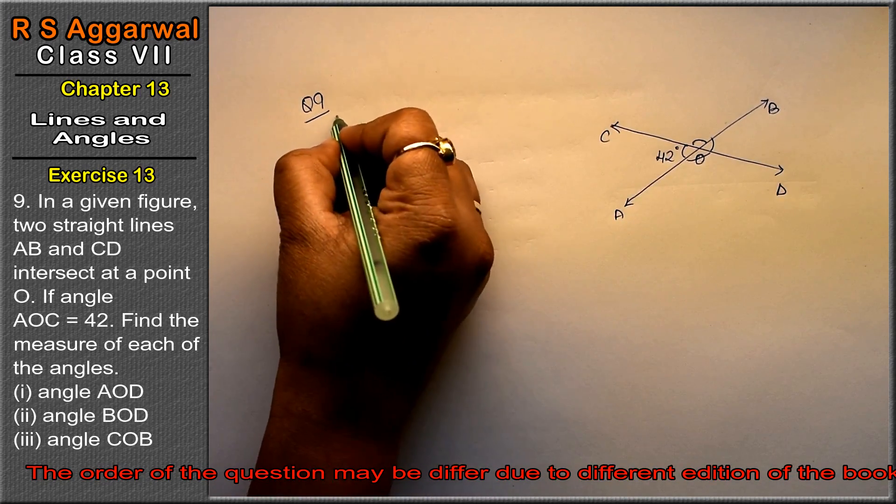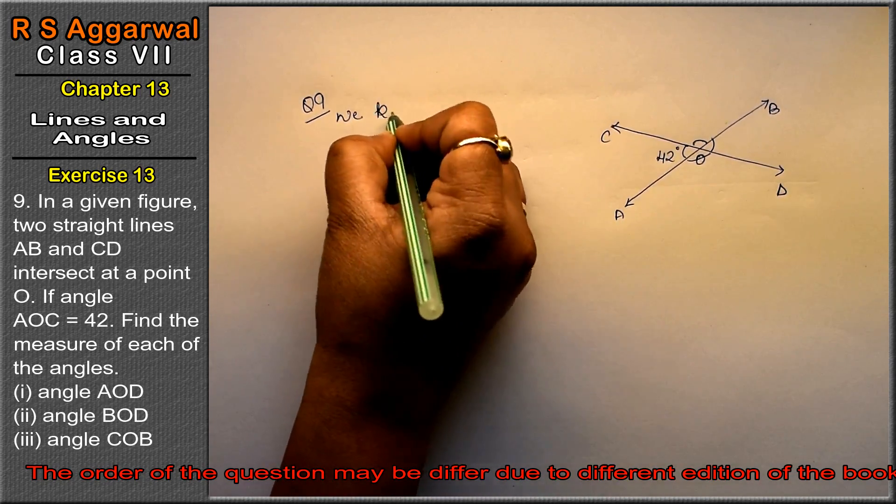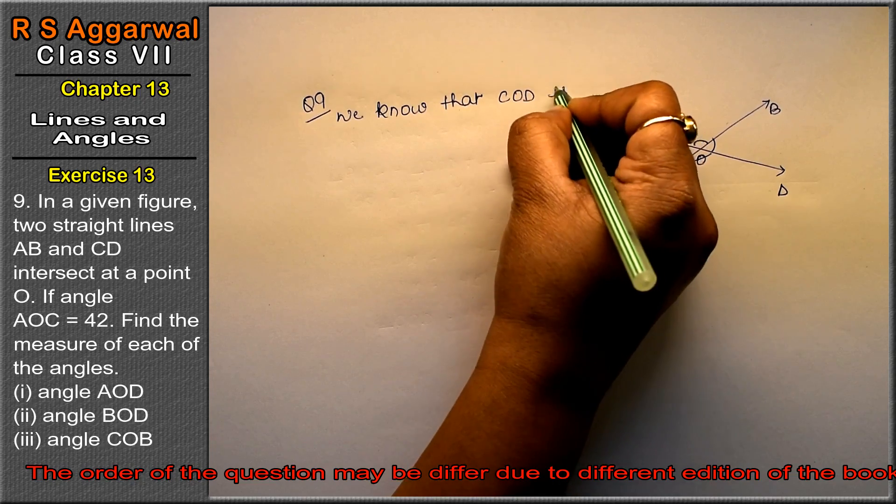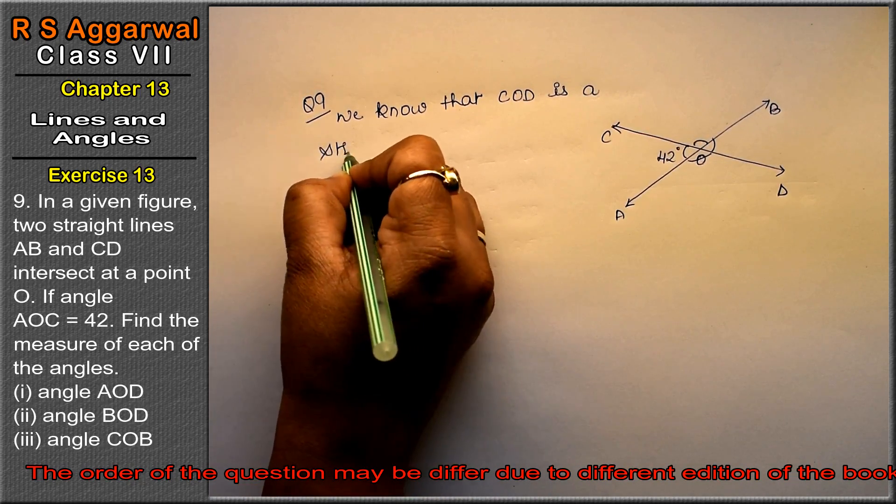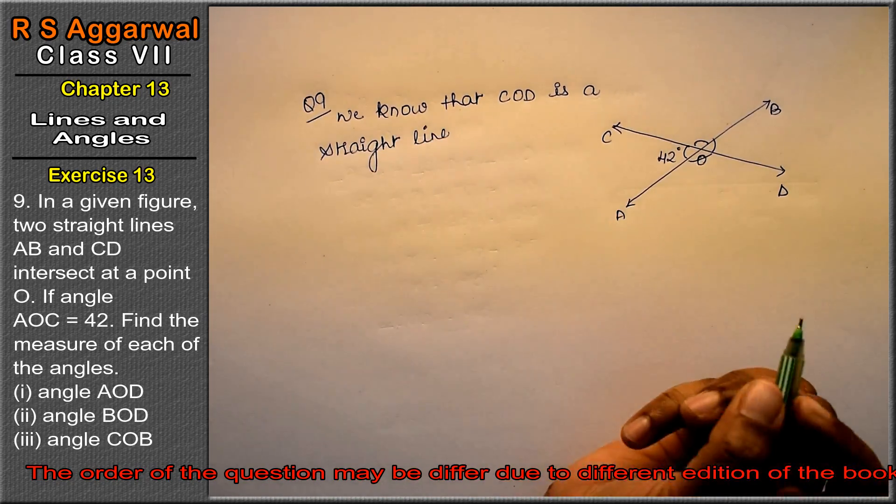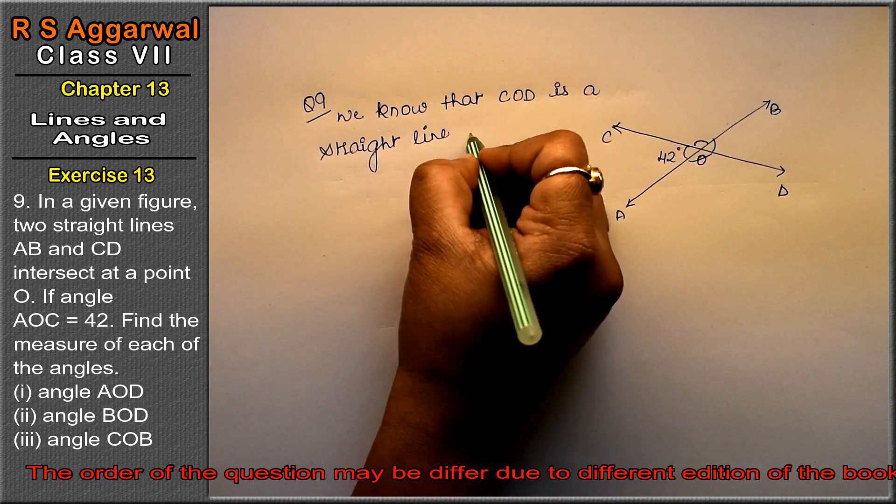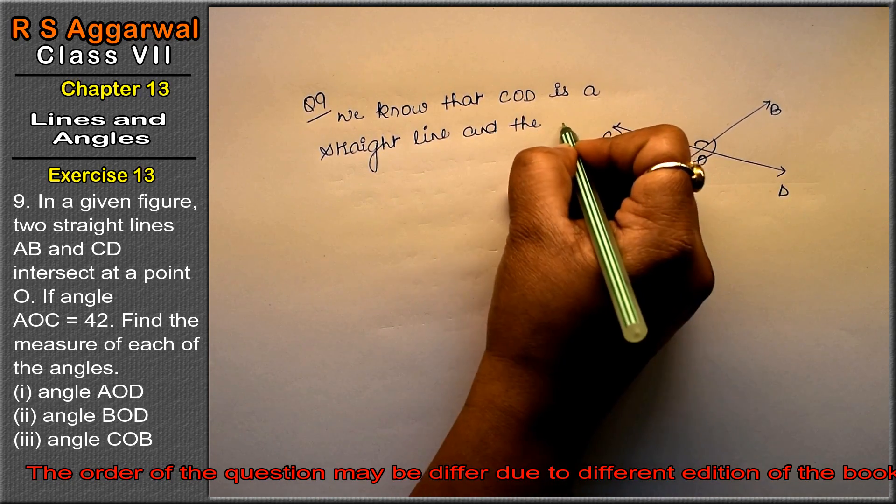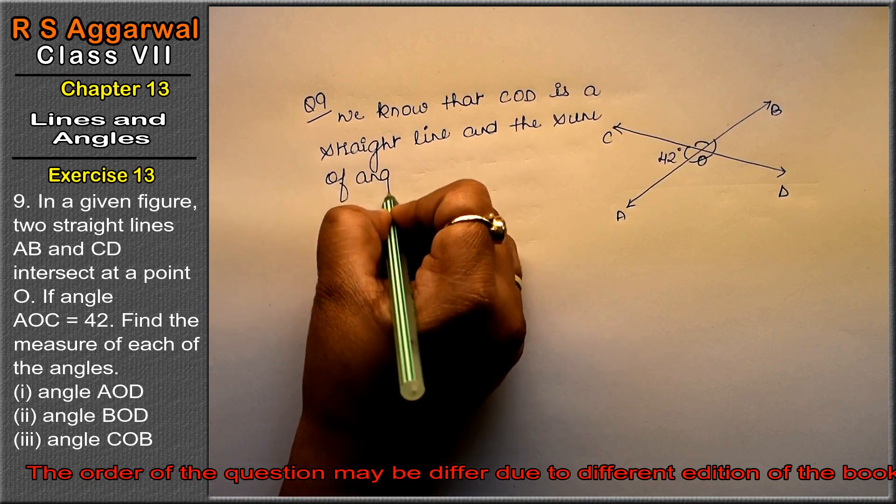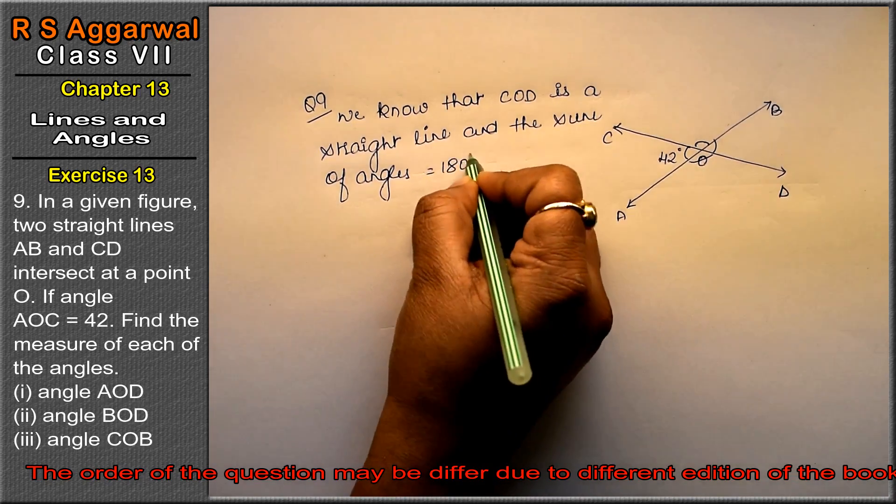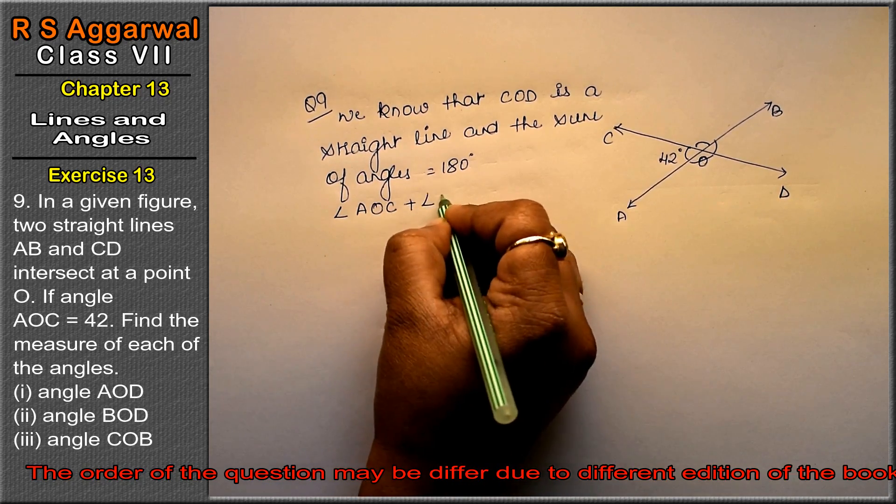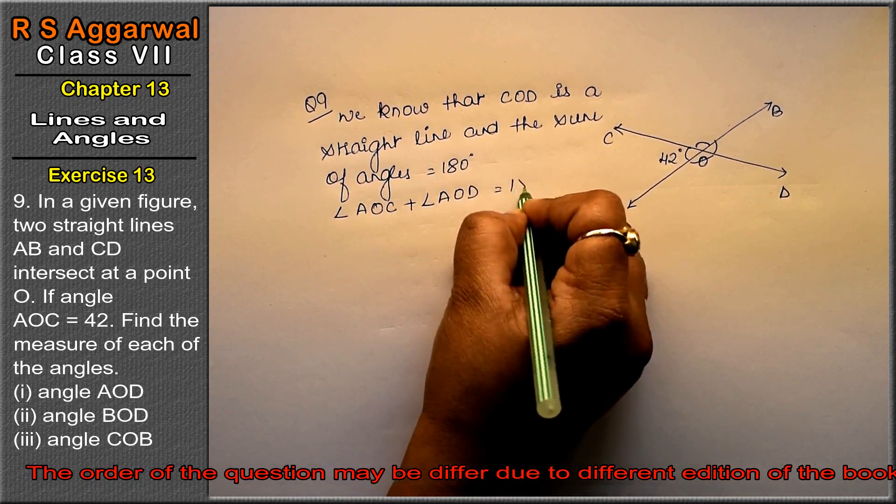Now, we know that COD is a straight line. And the sum of angles equals 180 degrees. So angle AOC plus angle AOD equals 180 degrees.